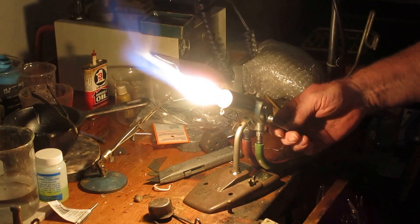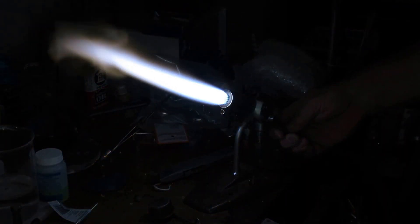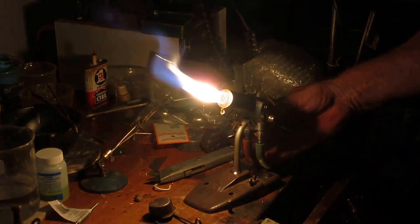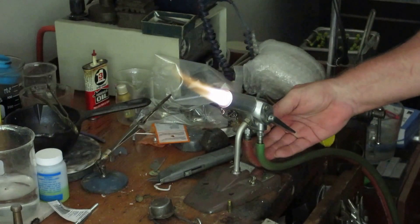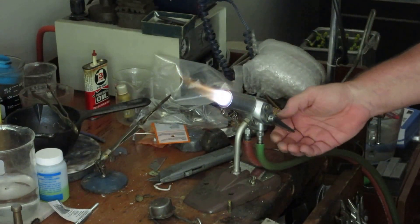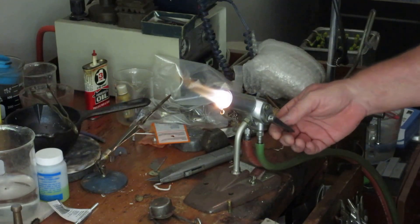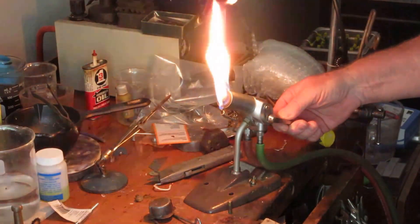Of course you can adjust it anywhere in between. Back up on the gas, the oxygen first, and the gas. Bring it down to a nice little flame. Turn the pilot light back on. Cut the oxygen off.